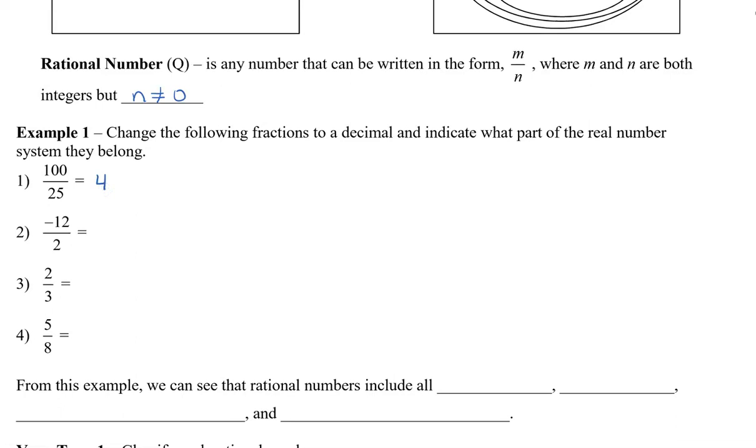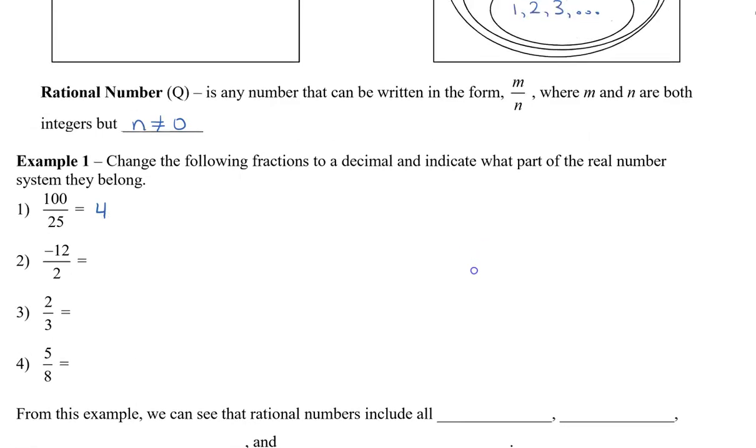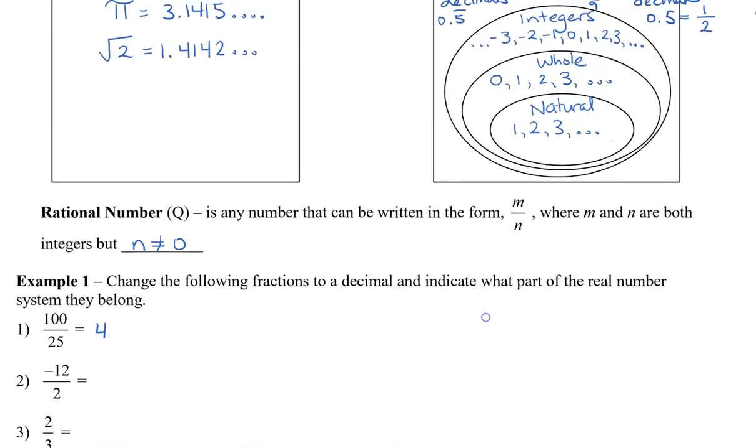So 100 divided by 25, we can see that is the same as 4, and it doesn't really have a decimal. And so based on our real number system and our rational number box here, we can see that 4 is natural. It's also a whole number. It's also an integer. And then therefore, it is also rational.